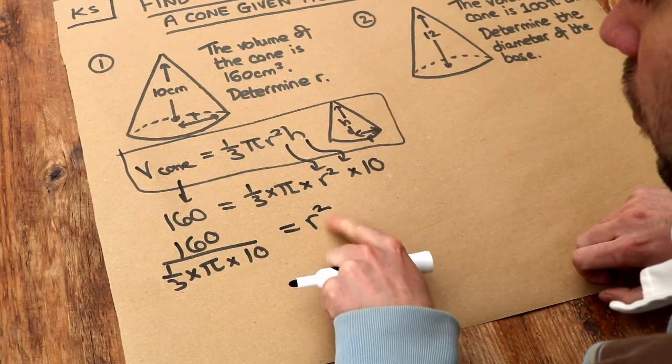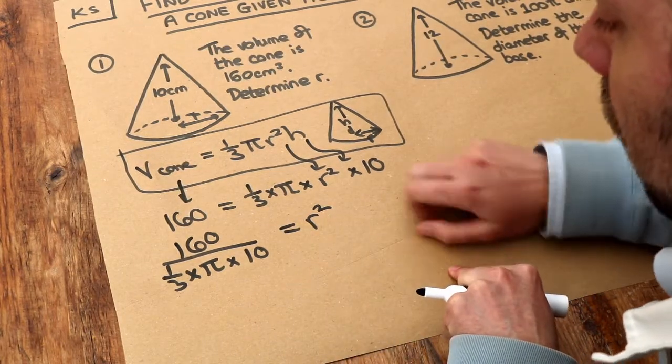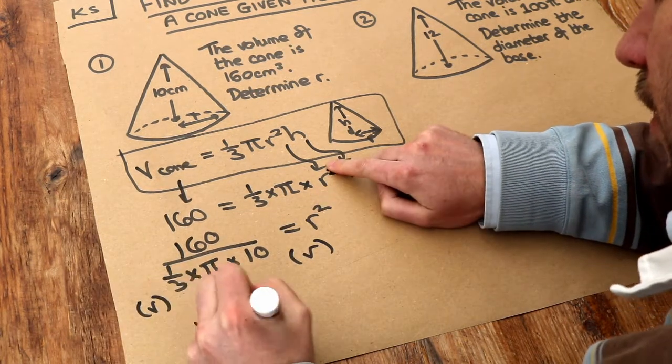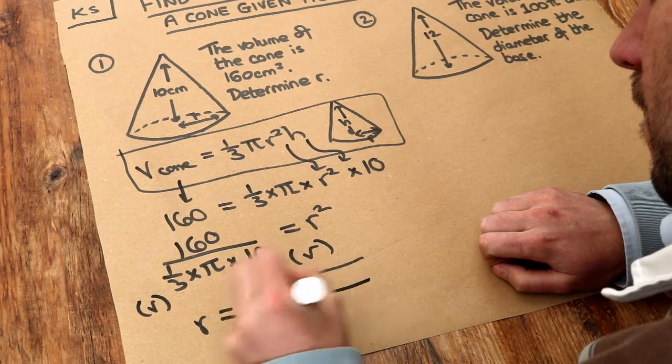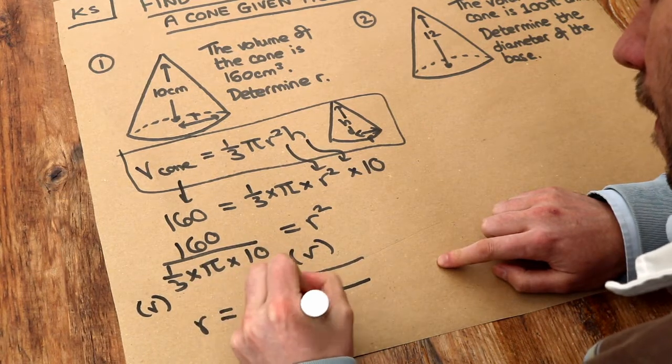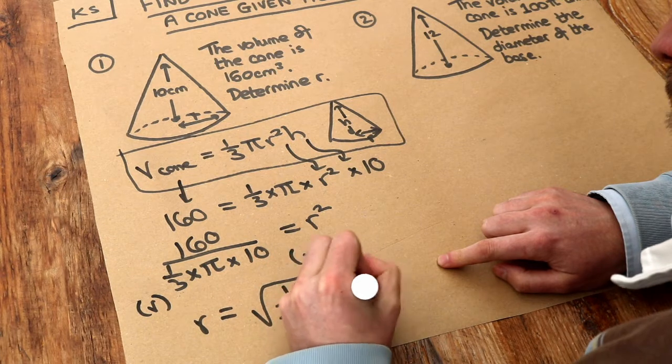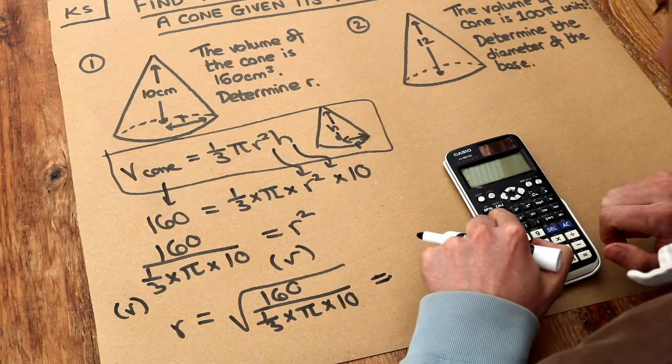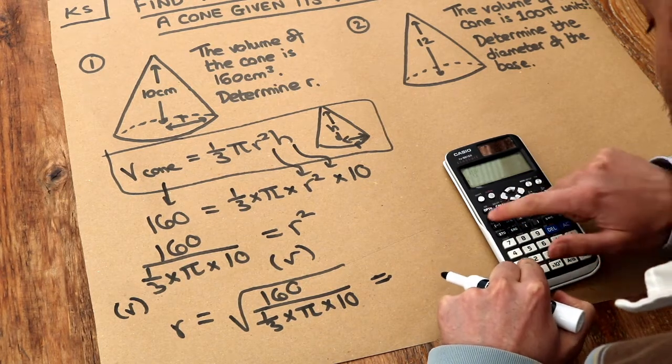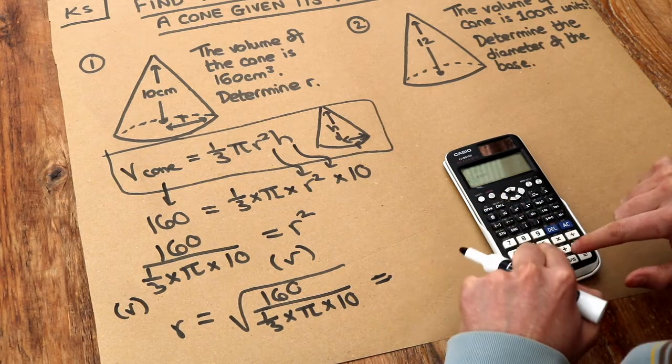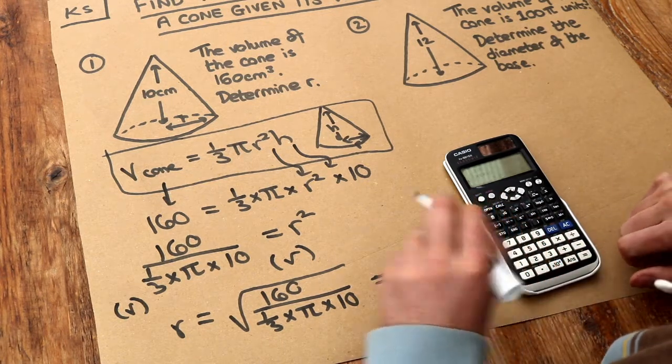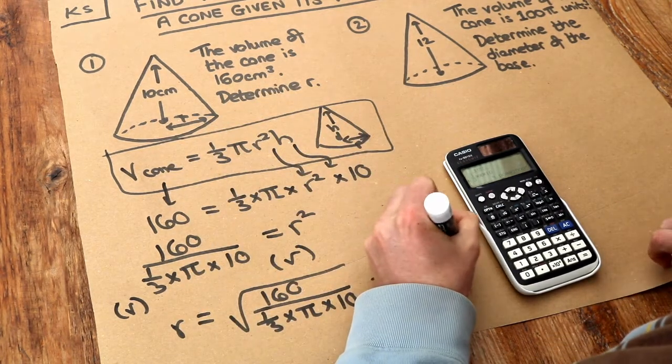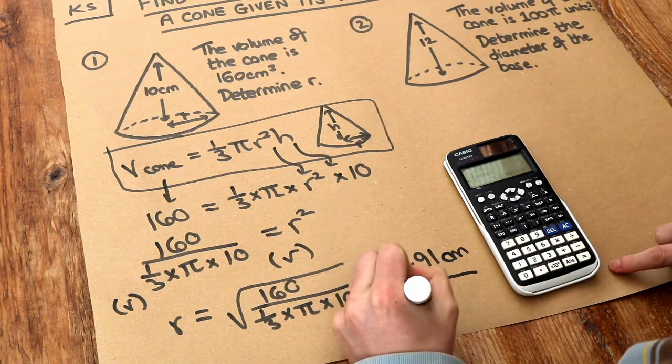To get r on its own we can just square root both sides to get rid of that squared. r is the square root of all of this, making sure the fraction is entirely under the square root. If I put that into my calculator, square root, fraction button, 160 over one third times pi times 10, that gives you 3.91. The unit is centimeters, so that's the final answer for r to three significant figures.